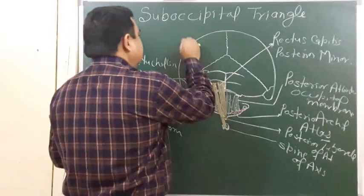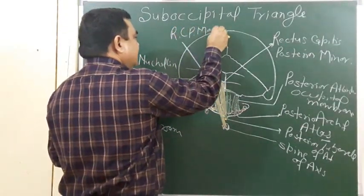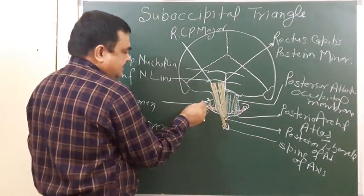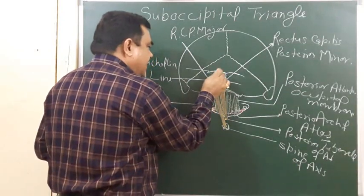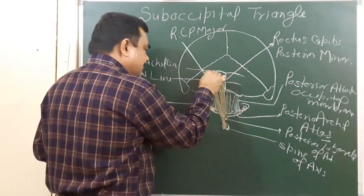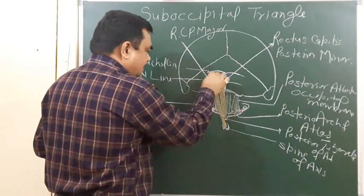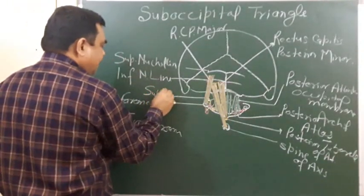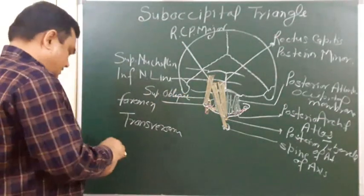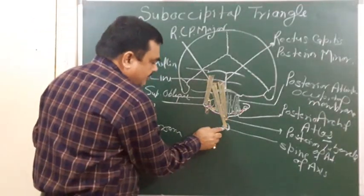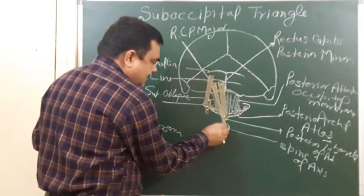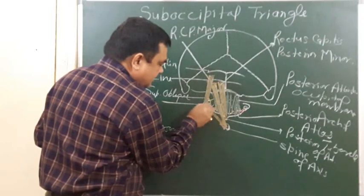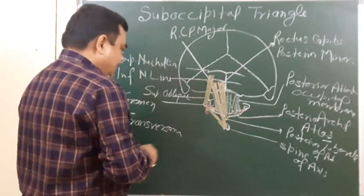The muscle from the transverse process of the atlas runs upward and is inserted between the two nuchal lines. This muscle is the superior oblique muscle. The muscle which takes origin from the spine of the axis and is inserted under the transverse process of the atlas is the inferior oblique muscle.